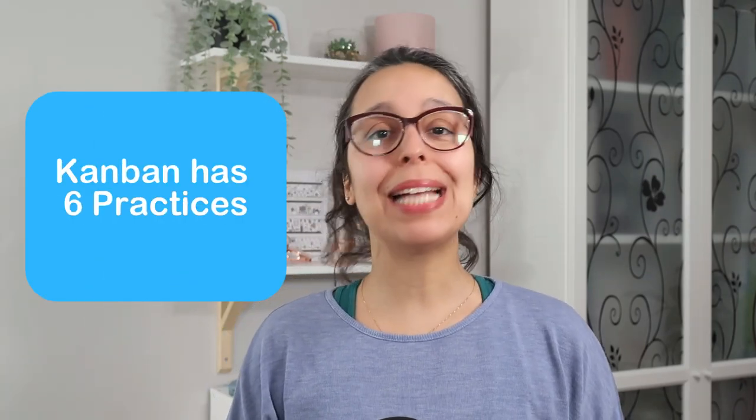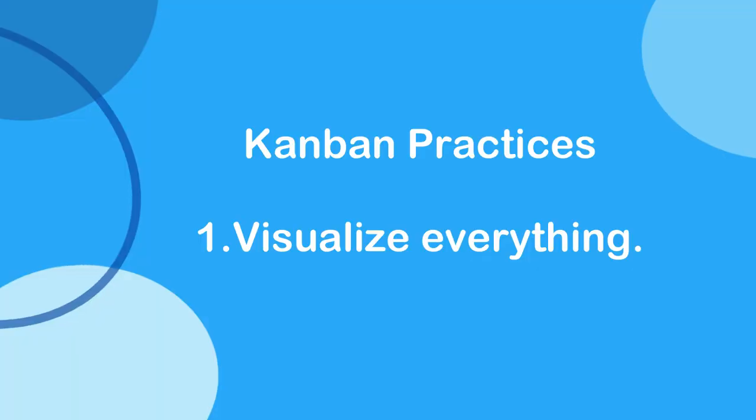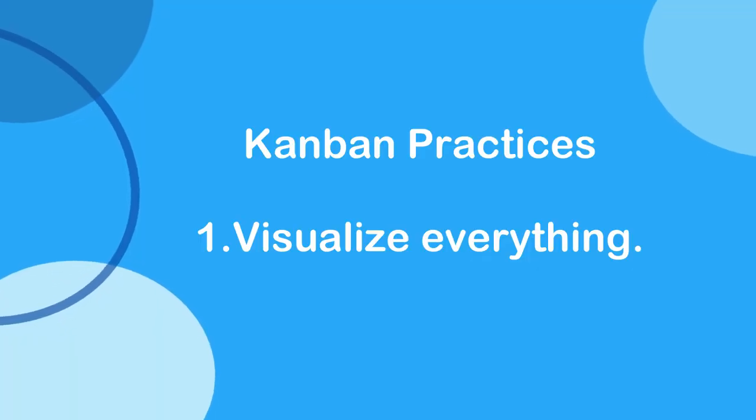So now let's talk about the practices. Kanban has six practices. The first one — I'm sure you've seen it everywhere — is: visualize everything. I'm sure you've seen those Kanban boards everywhere.